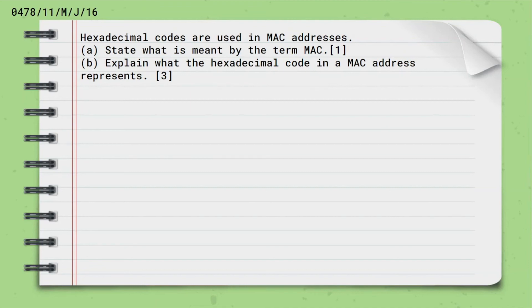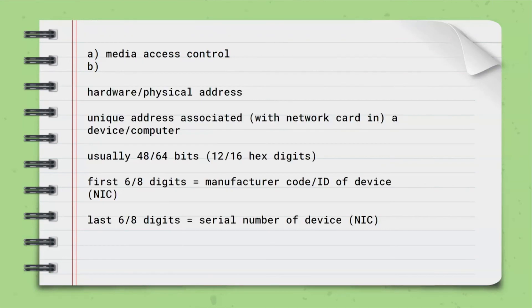Now let's move on to the next question. Hexadecimal codes are used in MAC address. State what is meant by the term MAC and explain what the hexadecimal code in a MAC address represents. Again here comes a repeated question in many papers. Also remember to know all full forms which can fetch you a mark. The answer is media access control. For the second one, the answer is hardware or physical address. MAC address is unique address associated with the device or computer. MAC address is usually 48 or 64 bits long. The first 6 or 8 digits are the manufacturer's code and the last 6 or 8 digits are the serial number of the device.